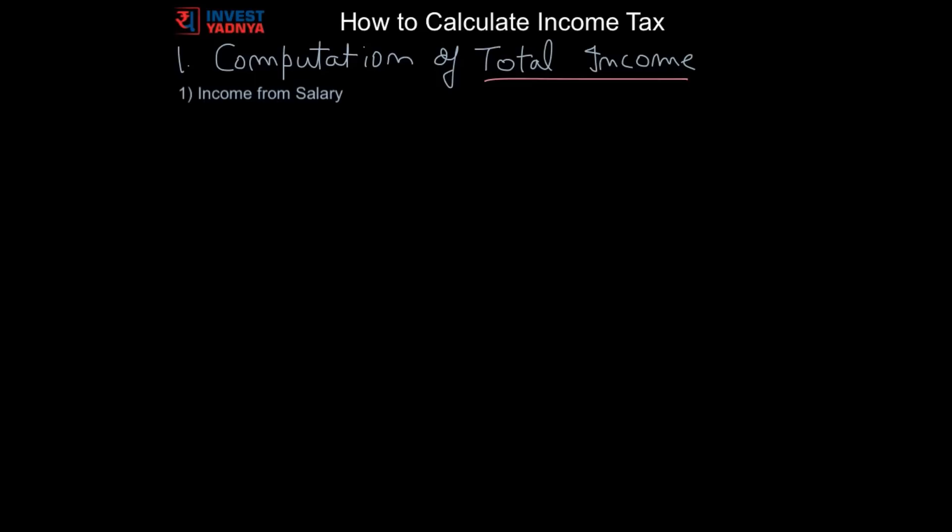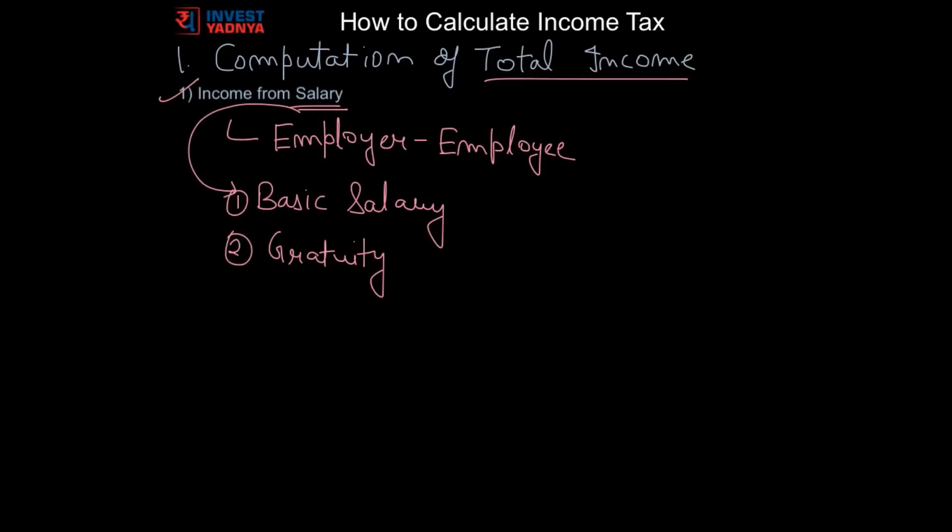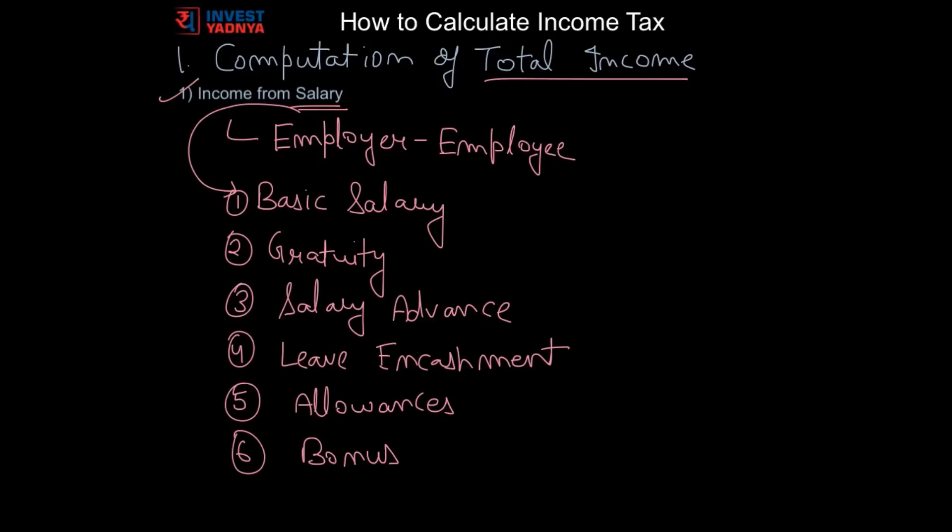First is income from salary. Income can be charged under this head only if there is an employer-employee relationship. Salary includes basic salary, gratuity, advance of salary, leave encashments, all allowances, bonus, etc. The aggregate of all these incomes after exemptions available in the way of allowances is known as gross salary and this is put under the head income from salary.